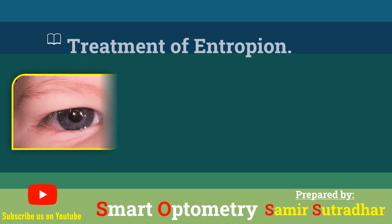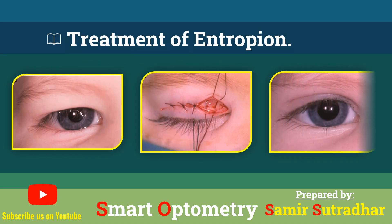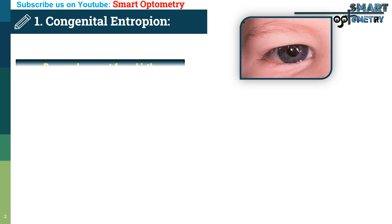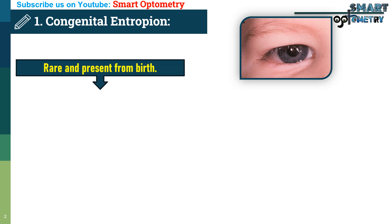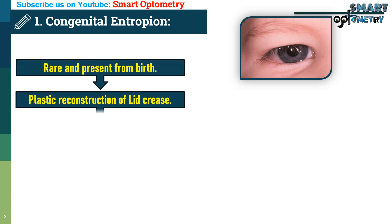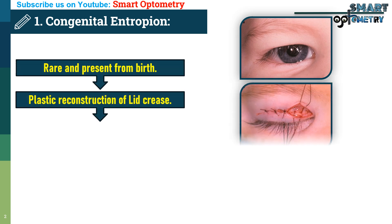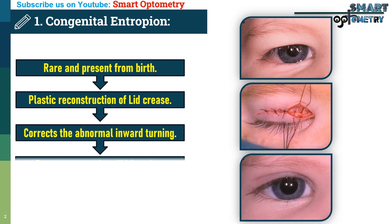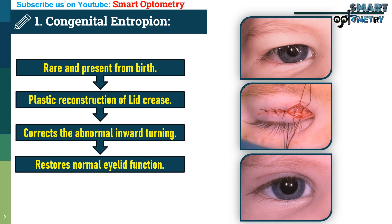In this video, we will learn about treatment of entropion. Treatment for congenital entropion: For congenital entropion, which is rare and present from birth, the treatment involves plastic reconstruction of the eyelid crease. This procedure corrects the abnormal inward turning and restores normal eyelid function.